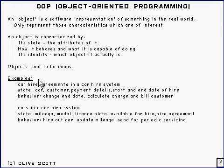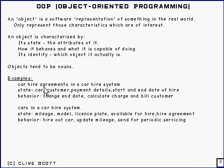It's best to make it a bit clearer with an example. If you imagine you've got a car hire system, within it you might have objects called car hire agreements. Typically you'd have more than one of them if you've got more than one car or more than one hire agreement. The sort of thing that the car hire agreement would contain would be things like the car — that's part of the state — the customer who's being hired to, perhaps any payment details, and the start and end dates of the hire period.